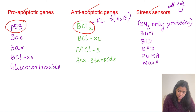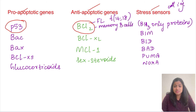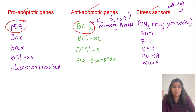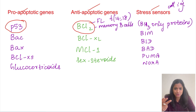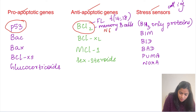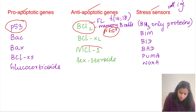Another important point about BCL2: in memory B cells, BCL2 is expressed so that memory B cells do not die. Memory B cells must survive long-term to retain immunological memory. To prevent apoptosis, memory B cells express BCL2, and this expression is regulated by nerve growth factor.